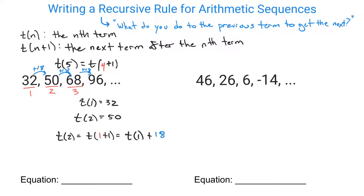And that's going to equal my t(1) term plus 18. Because you are adding 18 every single time to go from one term to the next, t(1) is the very first term. So that's why you have this recursive rule. So to generalize it, we don't want to use just 2 and 1s. We're going to say we're going to have t(n+1). And that's going to equal what are we doing to t(n), the one before it? You're always adding 18 to it.